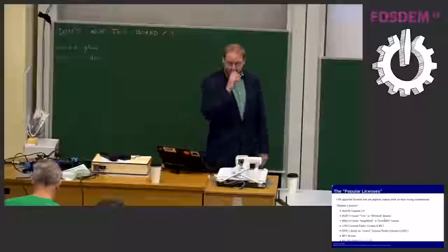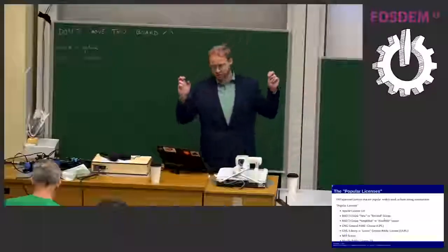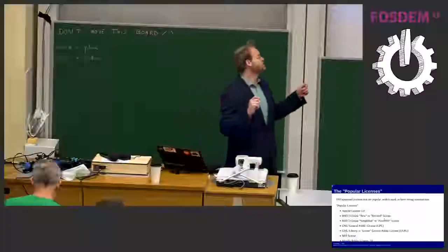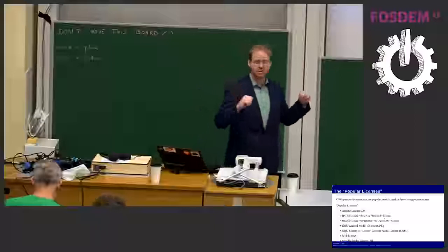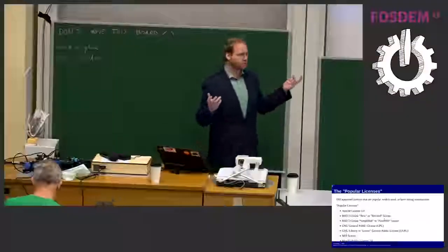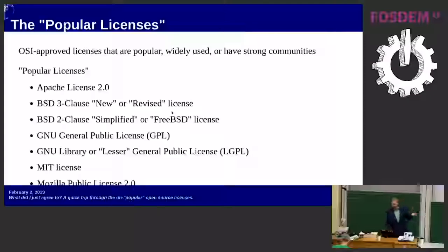OSI has about 83 open source licenses they've approved as being open source, and they categorize them. If you go to their list of licenses, they identify which ones are the popular licenses — the ones everyone's pretty familiar with: Apache, the BSDs, a subset of the GNU licenses, MIT, and the Mozilla Public License.